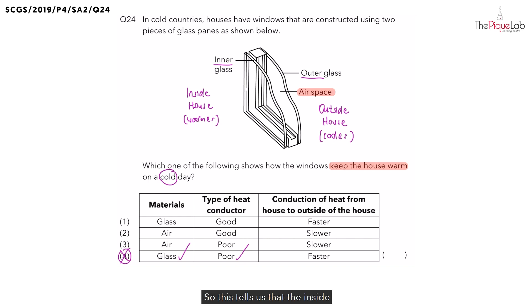This tells us that the inside of the house is losing heat to the cooler air outside the house. The question here is why? Remember, what is the property of heat?